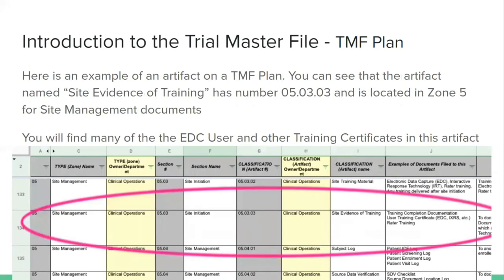This is a useful way to think about it, especially if you're coming from a different industry. Think of it as a filing structure. This is an example — people use varying terminology, but this is the TMF reference model, sometimes called the plan. It's basically a large Excel spreadsheet that most companies use. Some do their own thing with a Word document, but most have adopted the TMF reference model or something similar — a large Excel that details all the different folders and subfolders. In column J, you can see examples: site initiation, training, and different types of training such as EDC or IXRS systems.